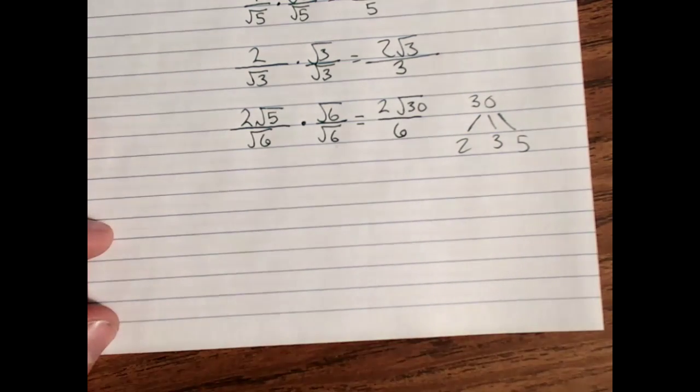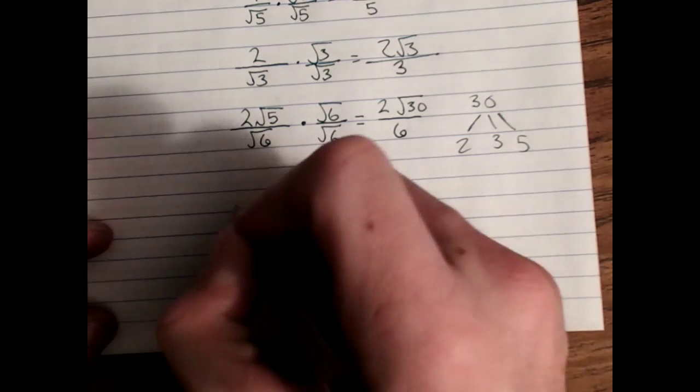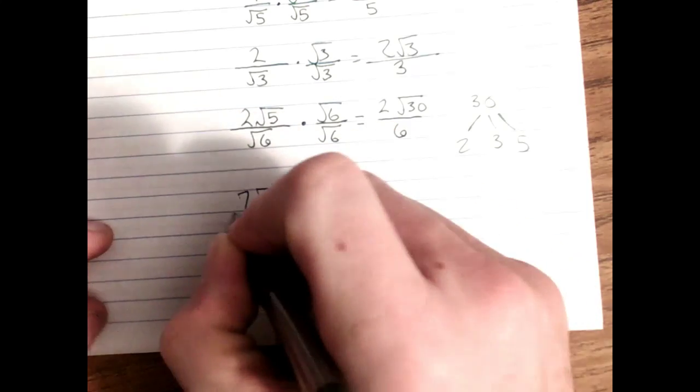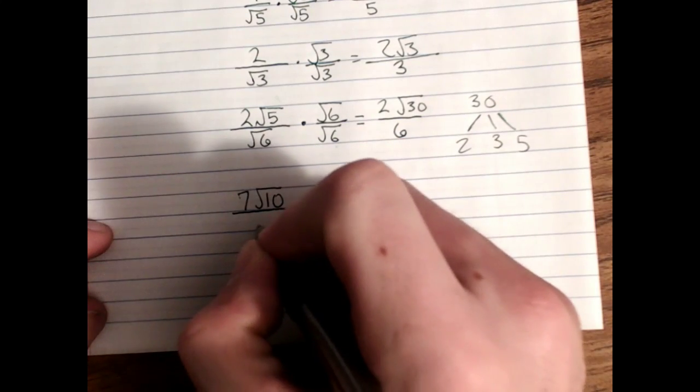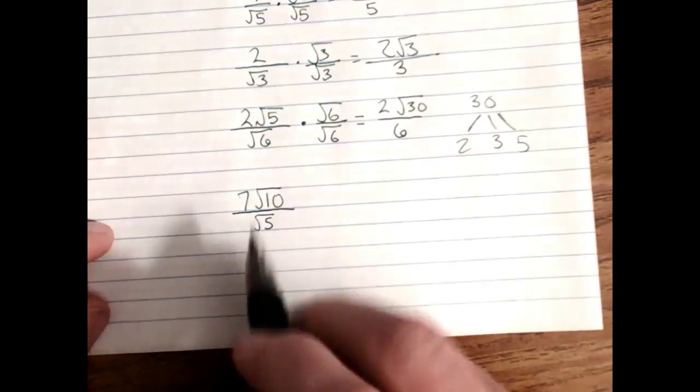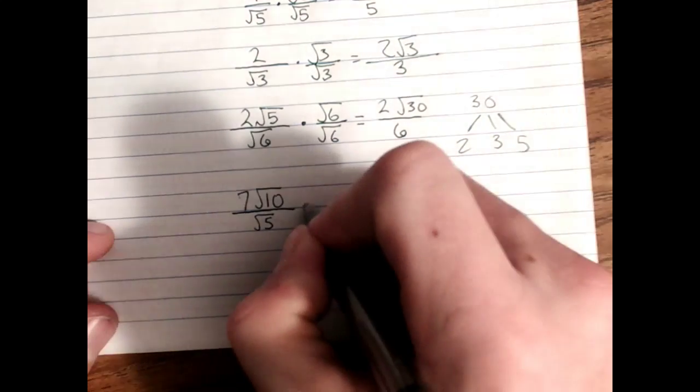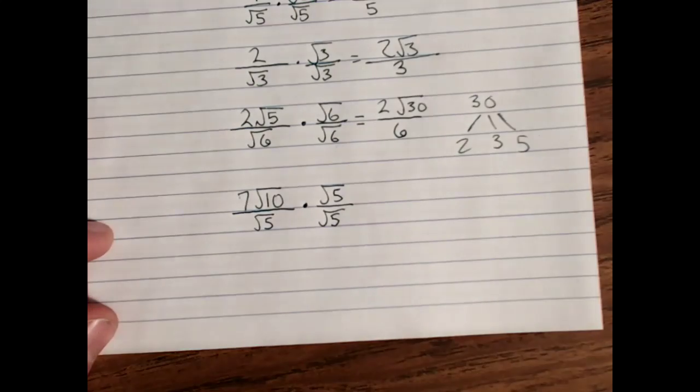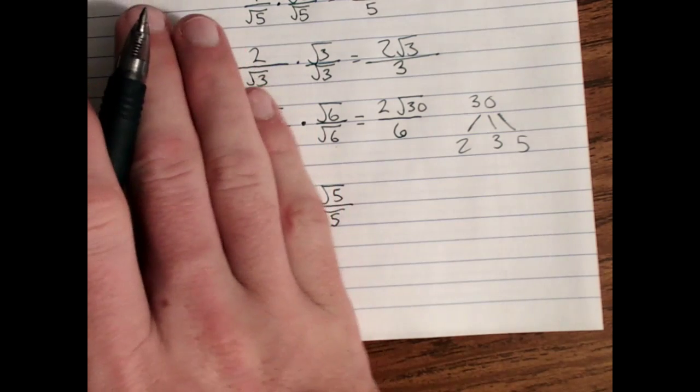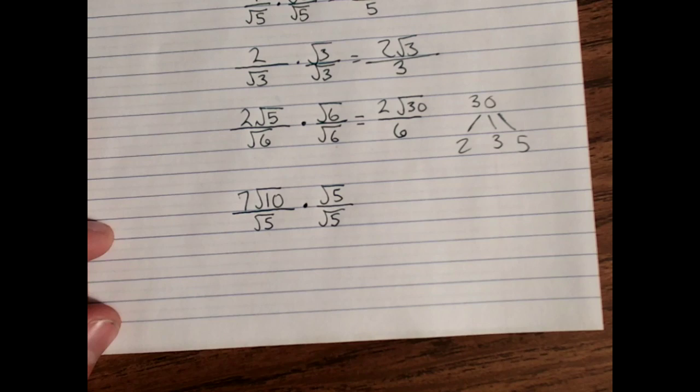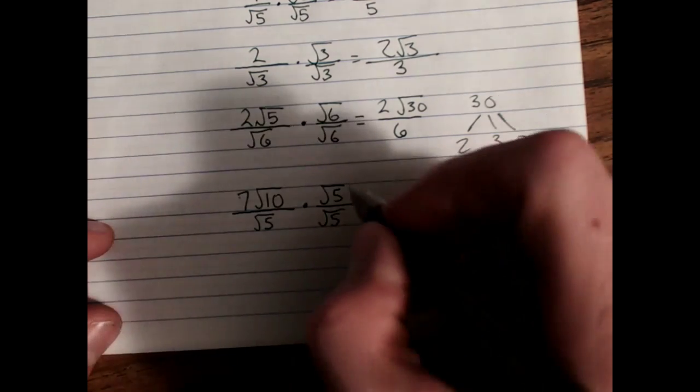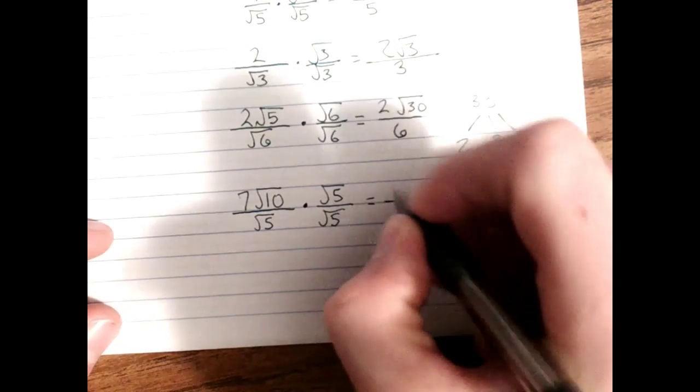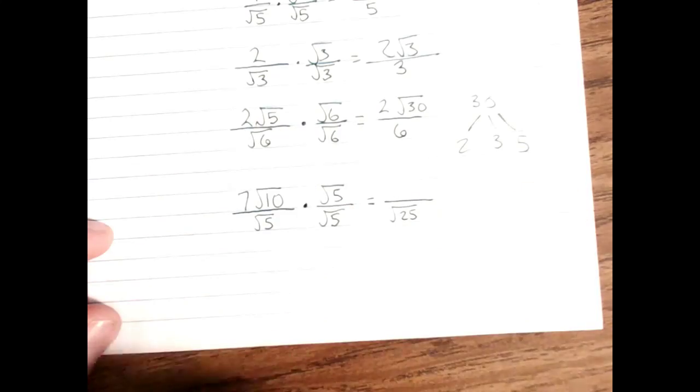So let's do an example where we will need to simplify at the end. Say we have 7 root 10 divided by root 5. We want to get rid of the root 5 on the bottom, so we multiply top and bottom by root 5 over root 5. Create a version of the number 1. Root 5 divided by root 5 is equal to 1. So we don't change the value, we just change the way the expression looks. Root 5 times root 5 on the bottom is just 5, or if you prefer, it's square root of 25, but that's going to simplify to 5.